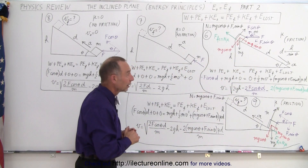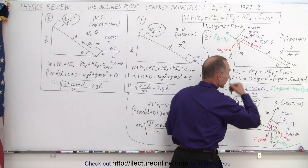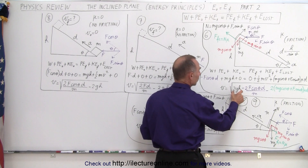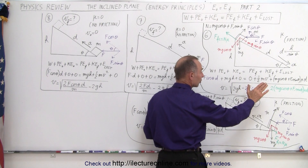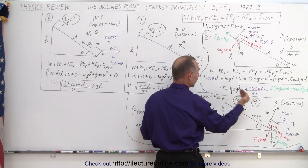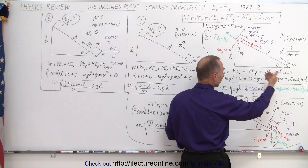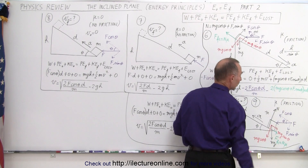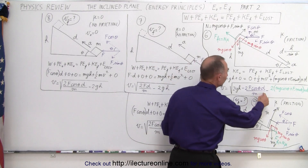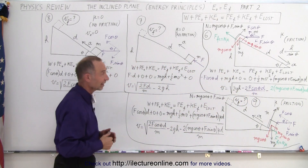When we solve for v, notice it equals the square root of 2gh when there's no friction and no external forces. But because the external force is working against the motion, the velocity will be slower than that. The friction force also works against it, making it slower still. Of course, if these two effects together are bigger than the driving term, the object will not slide down the incline at all.